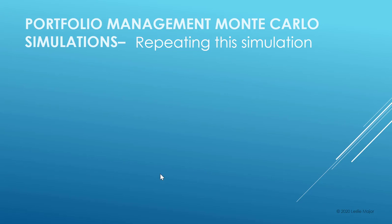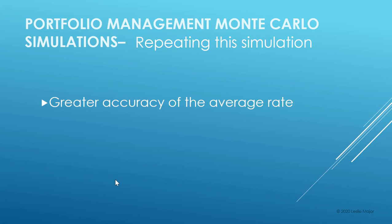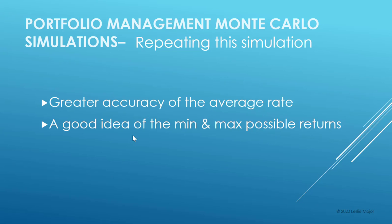Finally, let's look at how we would repeat the simulation many times. Why do we do that? It gives us much greater accuracy. Especially for averaging — if we want the average rate of return, it's much better to run the simulation many times, get the average of those averages, and that will approach our true average. That's the central limit theorem. We can also get a good idea of our minimum and maximum possible returns.